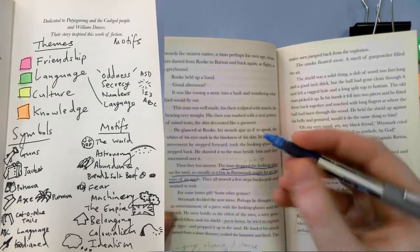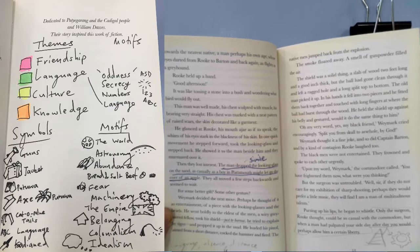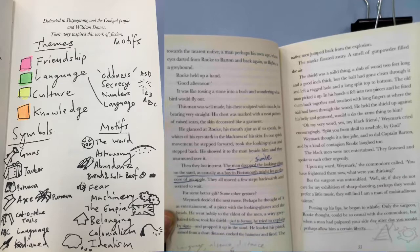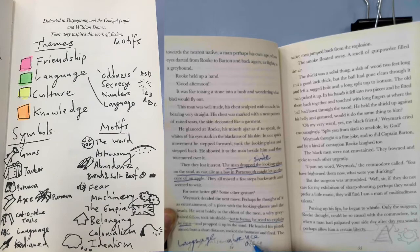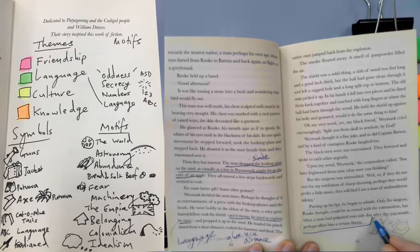Page 54, the man dropped a looking glass on the sand as casually as a boy in Portsmouth might let go the core of an apple. So it's clear now that the people they're face to face with aren't especially interested in their trinkets. And then, just to borrow, he tried to explain by signs. So Waymark is trying to act out. And this is useful for a whole bunch of things. We've got language here, we've got absence, we've got distance. So you can really feel viscerally the distance between these two groups and how they're really struggling to communicate and connect.